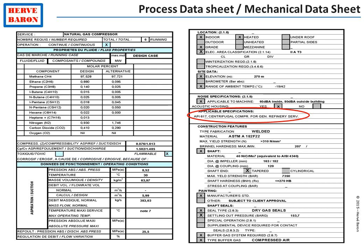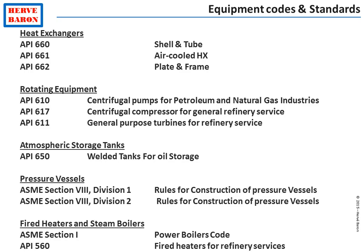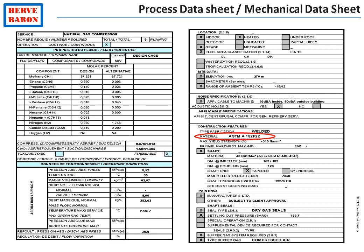Oil and gas facilities equipment are almost always specified to comply with an industry code, which is the American Petroleum Institute API code. For example, a turbo compressor mechanical data sheet is specified to comply with API 617. There are such codes for all types of equipment, containing prescriptions for the design, manufacturing, inspection, and testing of equipment to ensure a long and uninterrupted service life. The mechanical data sheet also indicates the material of construction, which is specified by the materials and corrosion discipline.